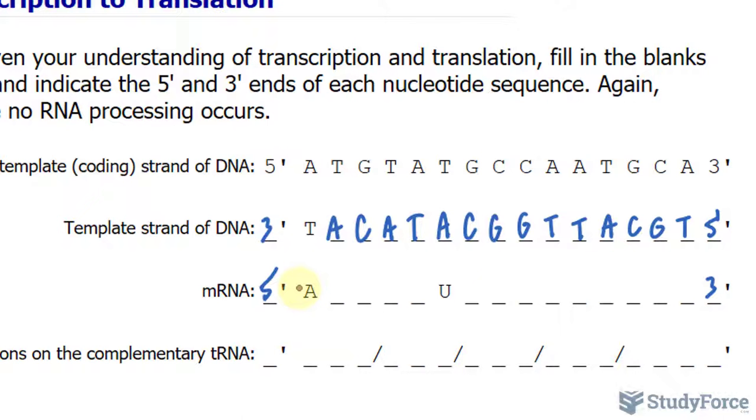T base pairs with A, but A base pairs with U, which represents uracil. So wherever you see an A along this nucleotide strand, you should have a base pair with U. Now that being said, mRNA or any form of RNA does not have thymine. So if you ever have thymine in the nucleotide sequence of an RNA molecule, then it's incorrect.